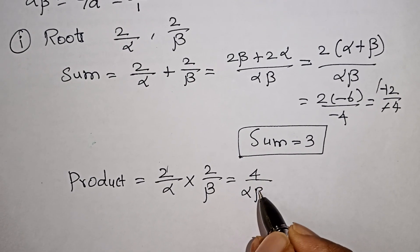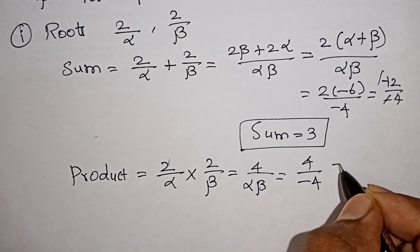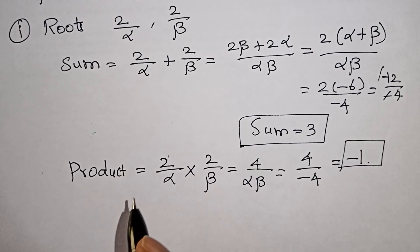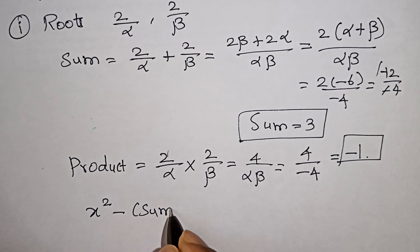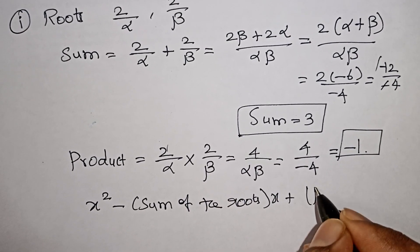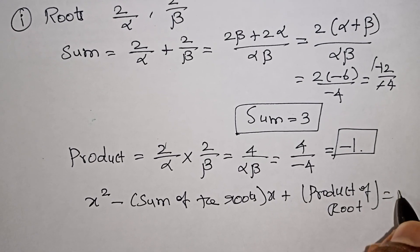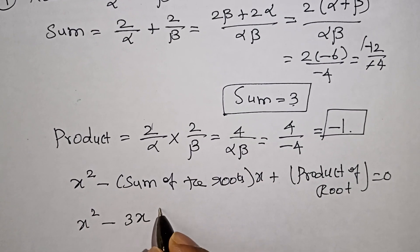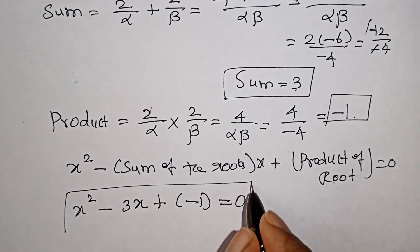Product equals (2/alpha) × (2/beta) = 4 / (alpha·beta) = 4 / (minus 4) = minus 1. So the product of roots is minus 1. Now substituting into the quadratic equation: x² minus (sum)x plus (product) = 0 gives x² minus 3x minus 1 = 0. This is the required quadratic equation.